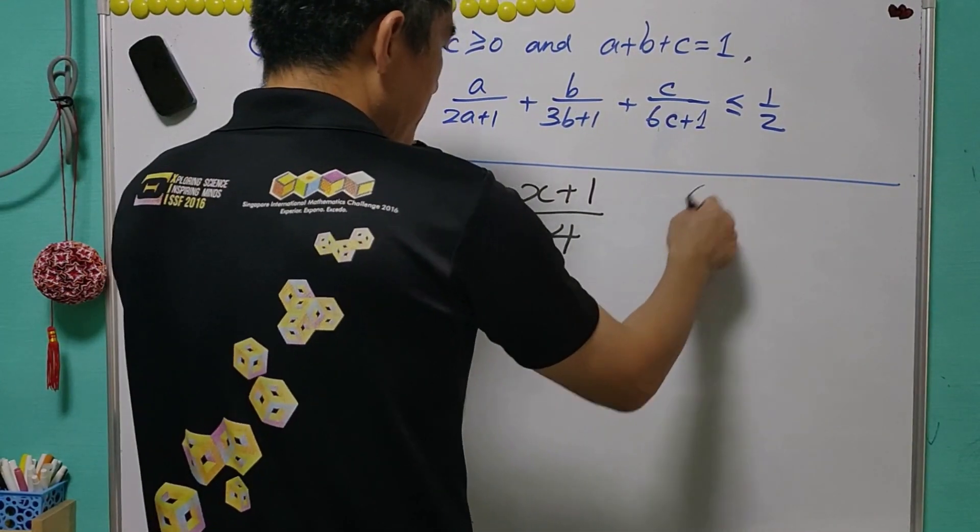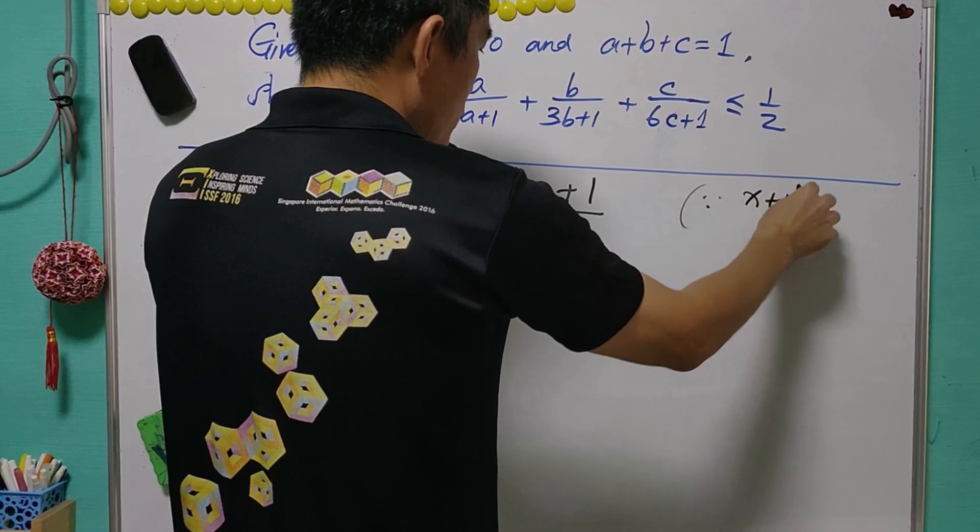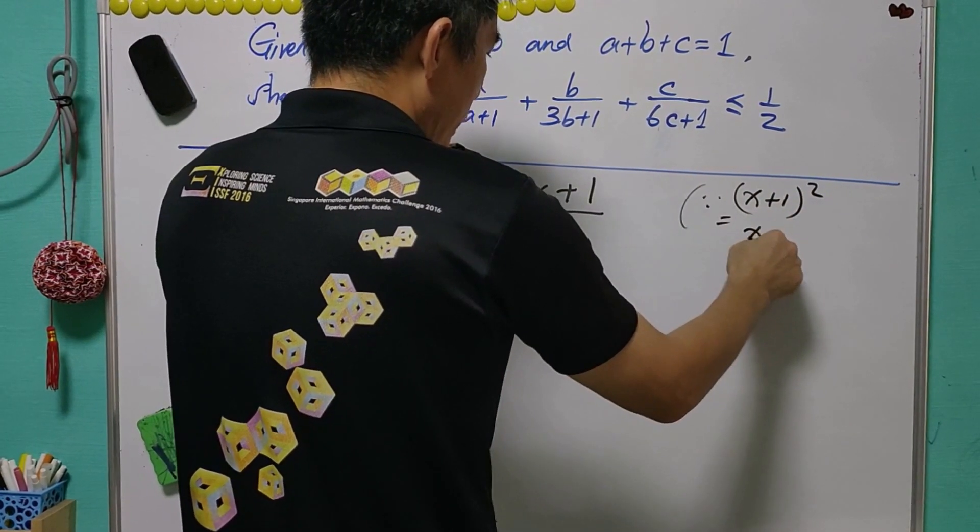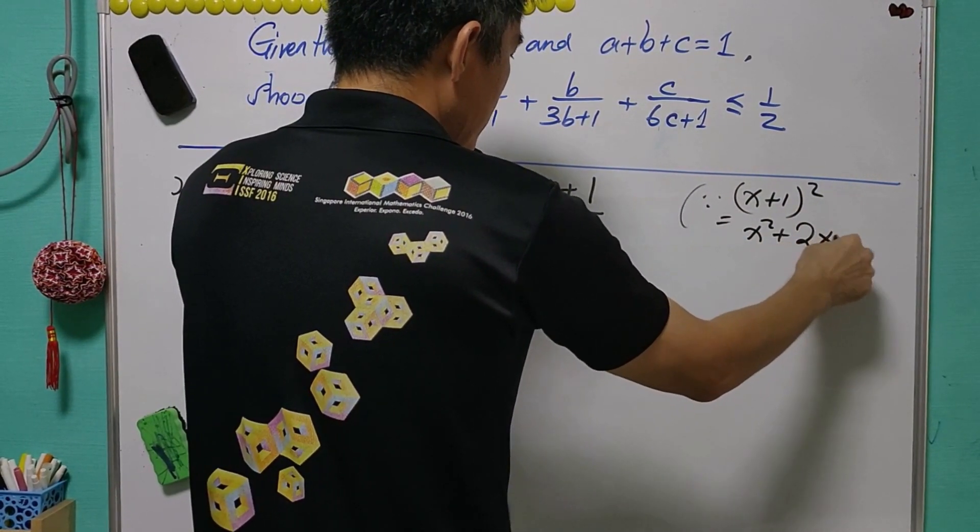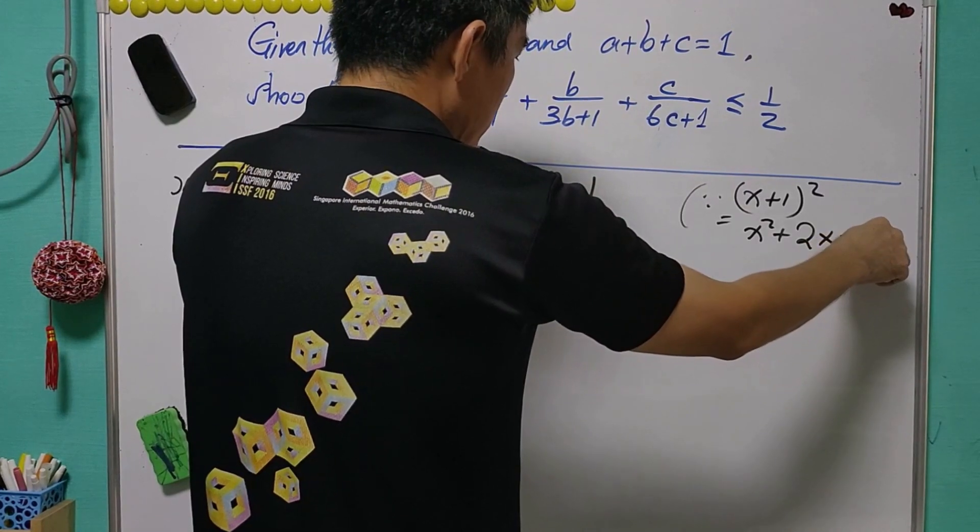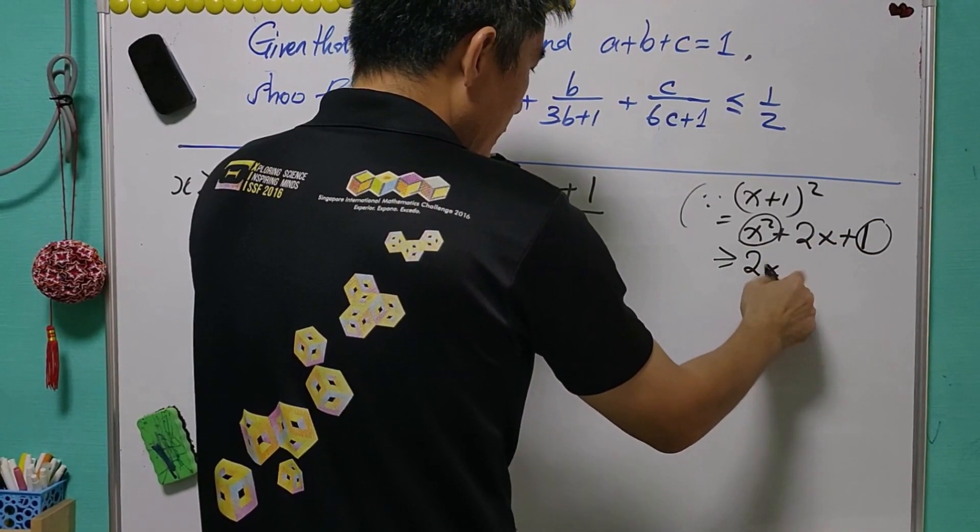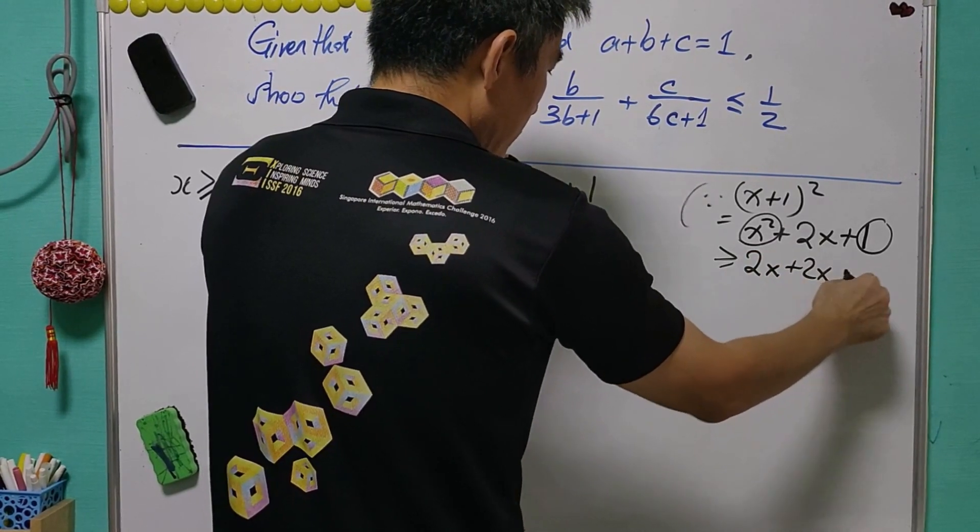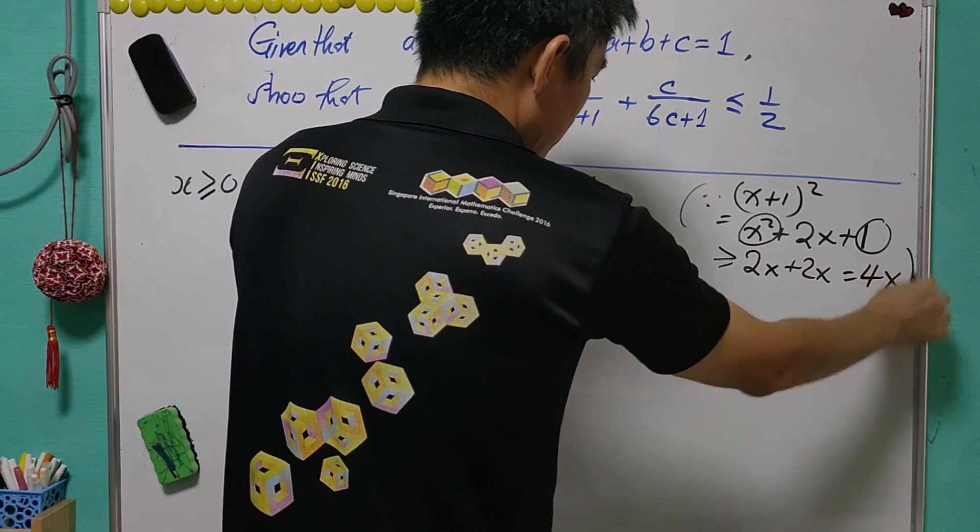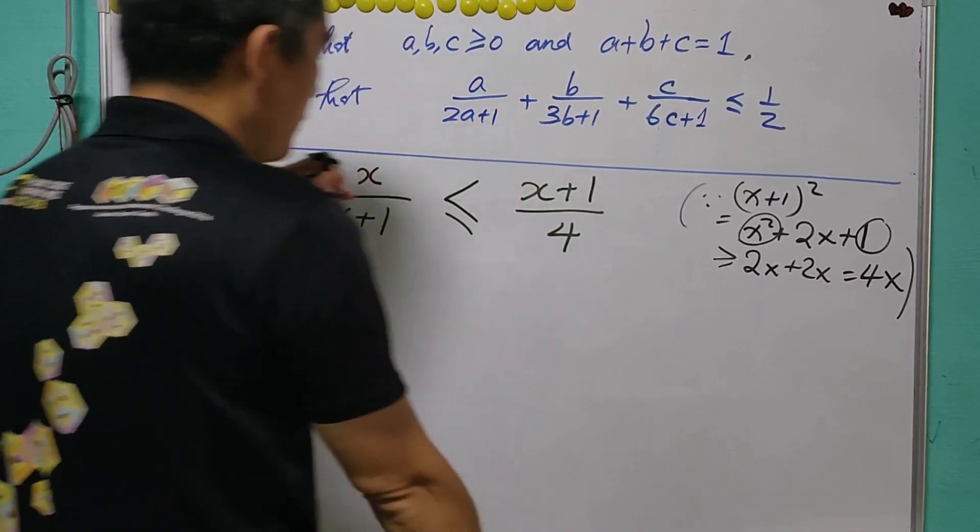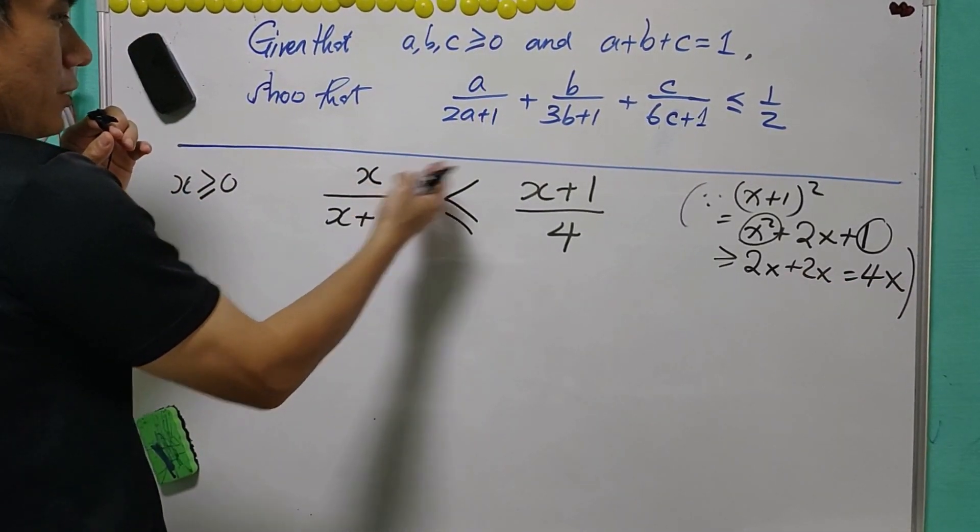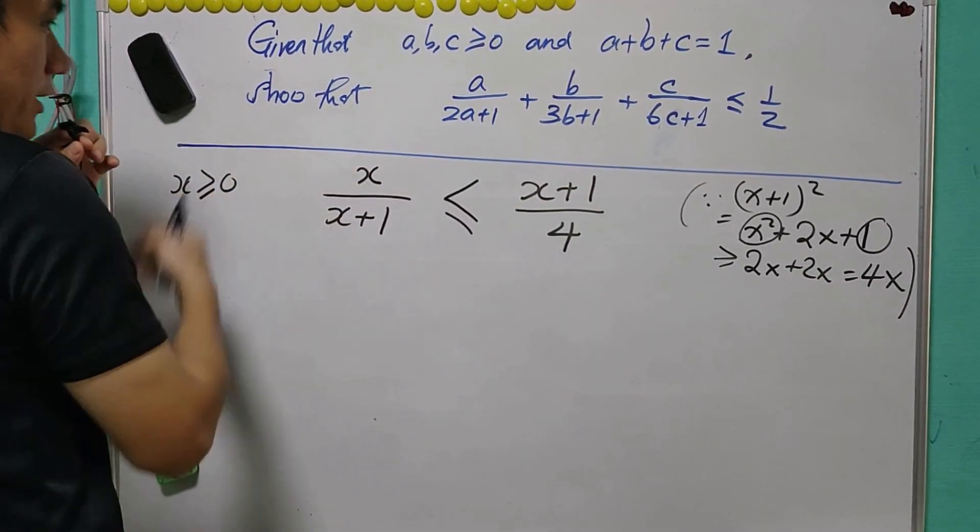Say that X plus 1 squared is equal to X squared plus 2X plus 1. Then, since X squared plus 1 is greater than or equal to 2X plus 2X that is equal to 4X, and since X is positive, then we can write into this form here.